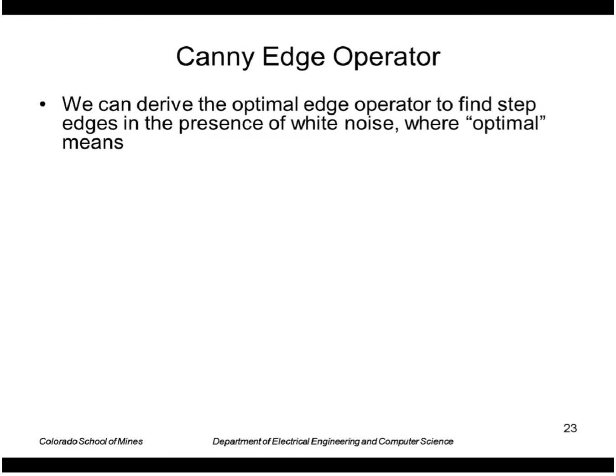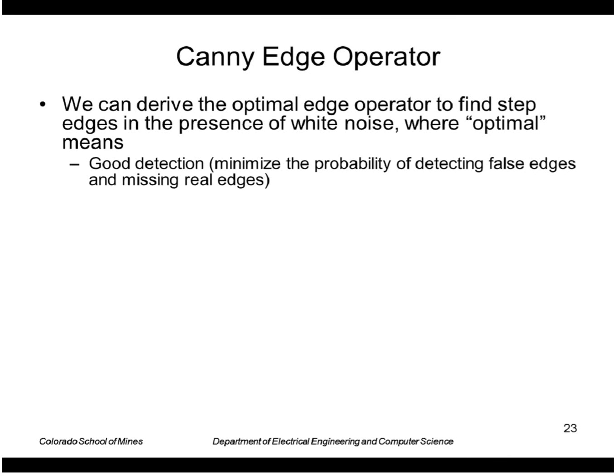A better edge operator is the Canny operator, which is the state of the art today for edge detectors. It was derived to find the optimal edge operator for step edges in the presence of white noise. Optimal here means good detection — we want to minimize the probability of detecting false edges and missing real edges.